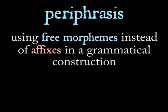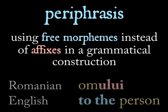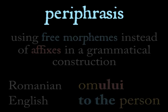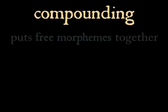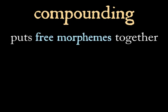Another fundamental concept is periphrasis, which uses multiple words to express the same grammatical concept that another language might express using an inflectional morpheme. There's also compounding, which takes two free morphemes and sets them side by side to represent a new concept.